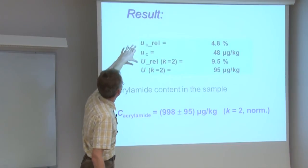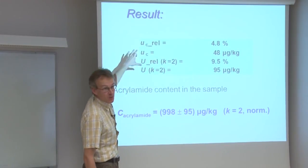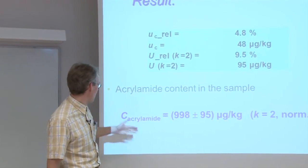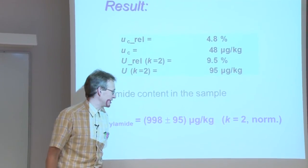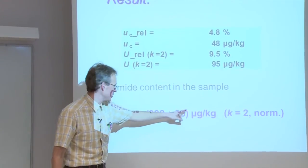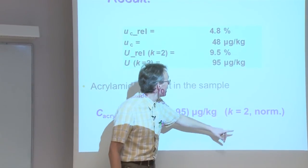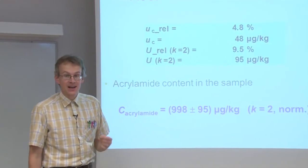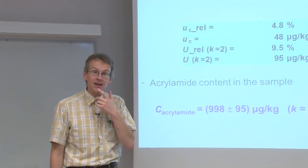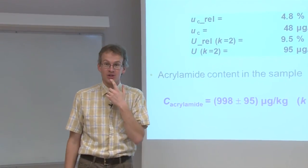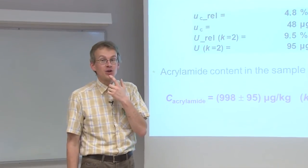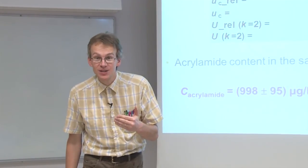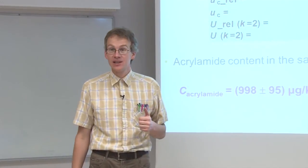This slide summarizes our measurement uncertainty calculation. The same uncertainties as calculated in Microsoft Excel are presented in different ways. The final result presentation includes: expanded uncertainty, value, unit, and coverage factor. I have also written 'norm' here, indicating normal distribution is assumed.